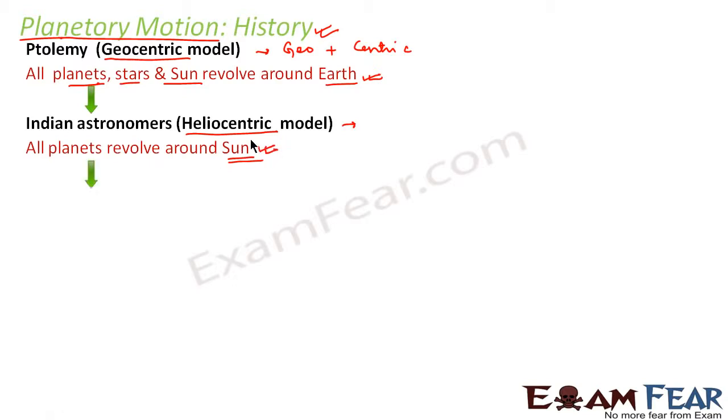Even after that, developments took place and a model came - the Nicolas Copernicus model, named after the scientist Copernicus. He told that planets move in circles around the central sun. He not only said planets revolve around the sun, but also that they revolve in circular orbits.